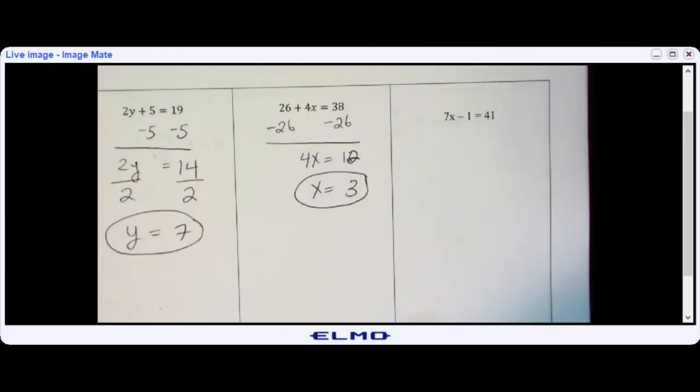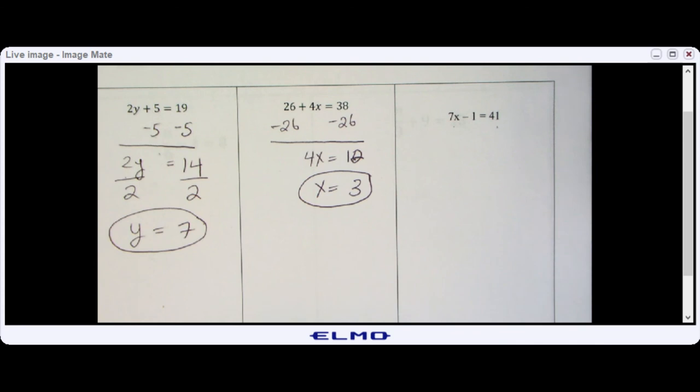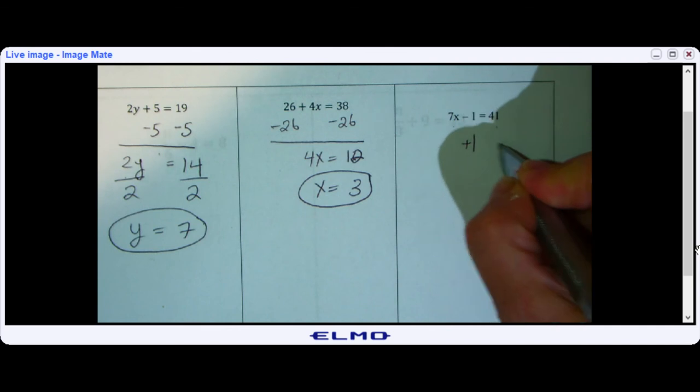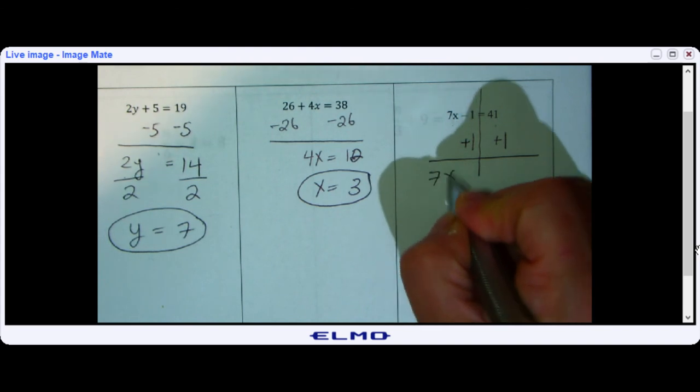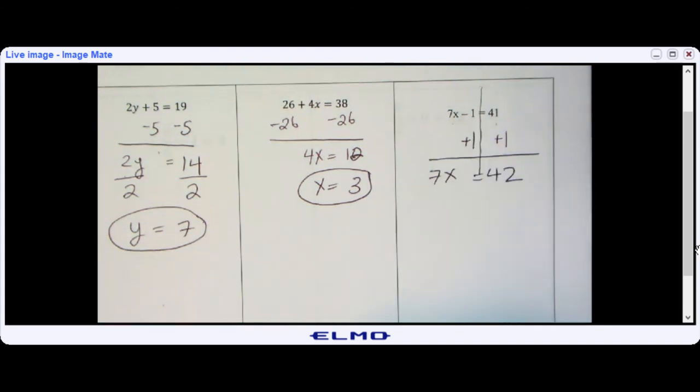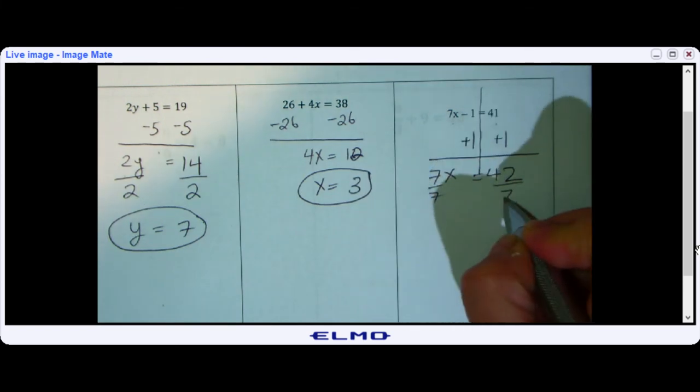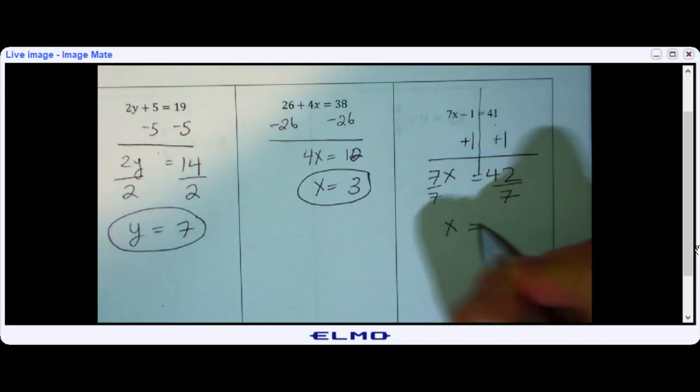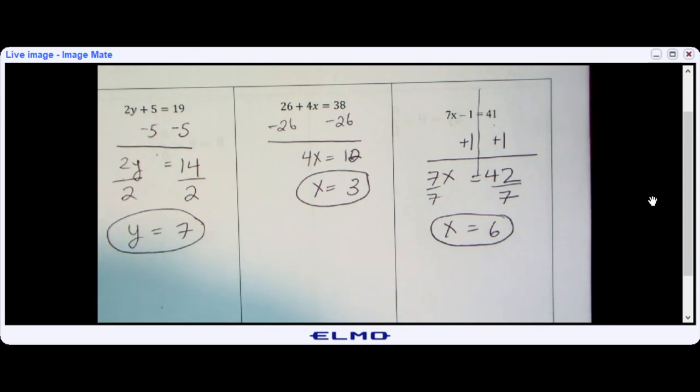And let's do the third one. This is 7x minus 1 is equal to 41. So the next step is to add 1 to both sides. I end up with 7x is equal to 42. Now I'm going to divide both sides by 7, and I get x is equal to 6.